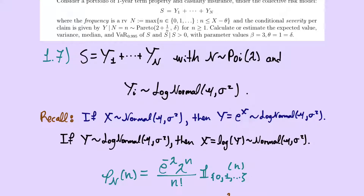Equivalently, if Y is a log-normal random variable, then X = ln(Y) is normally distributed. That is the reason it is called log-normal: its logarithm is distributed normal. The way to construct the distribution is through this transformation — this is an important fact for this exercise.